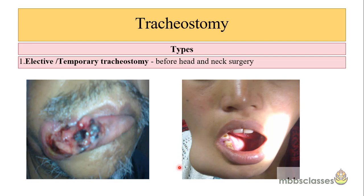This is a case of a jaw bone tumor — there is a swelling of the mandible on the right side. Since this patient needed hemimandibulectomy followed by reconstructive surgery, there is a possibility of development of edema, so elective tracheostomy is needed in cases like this.